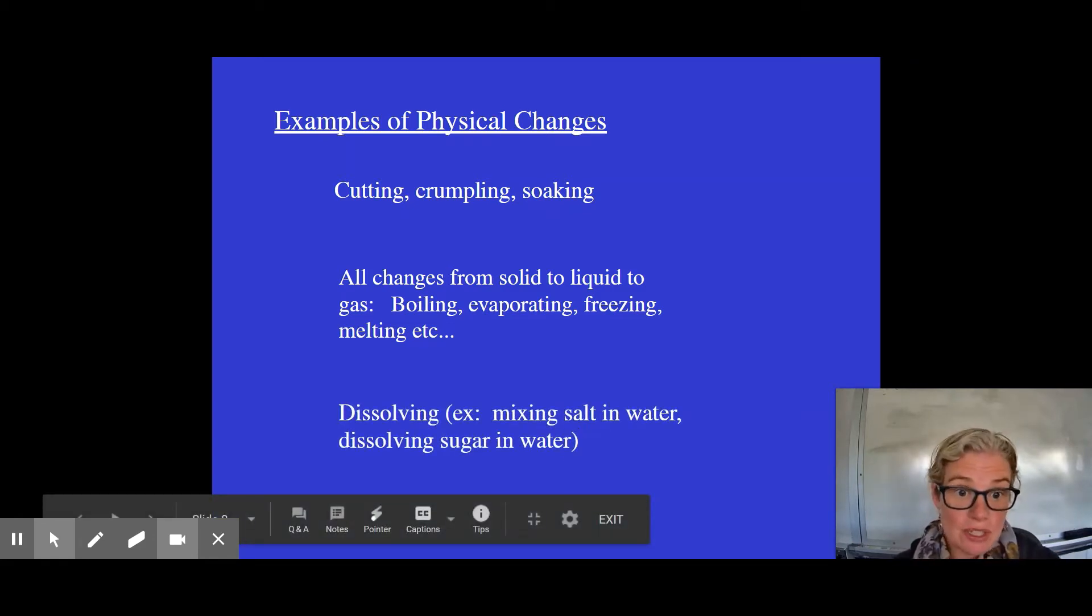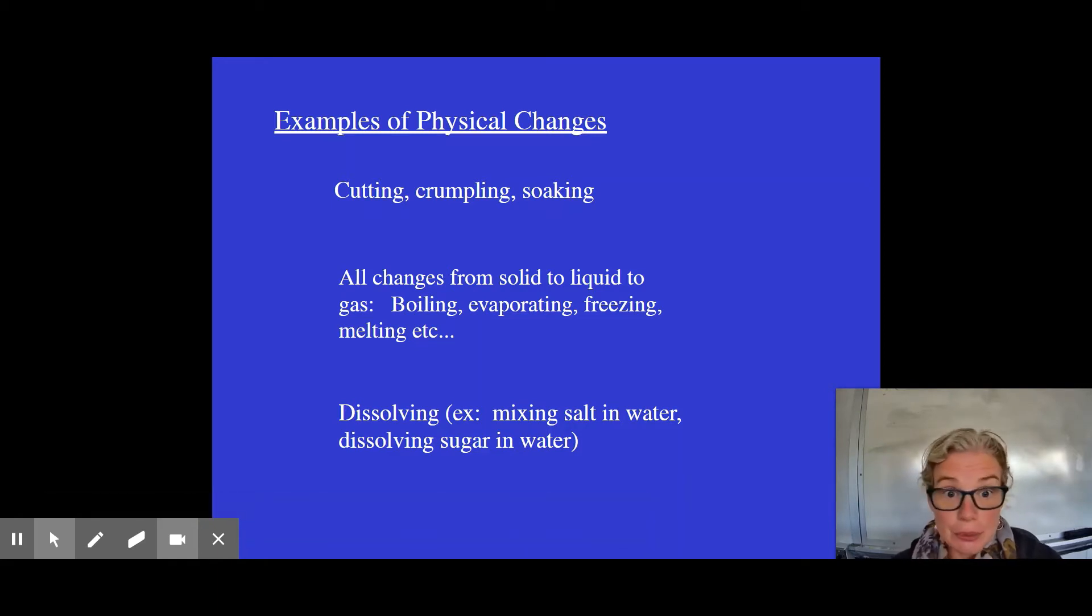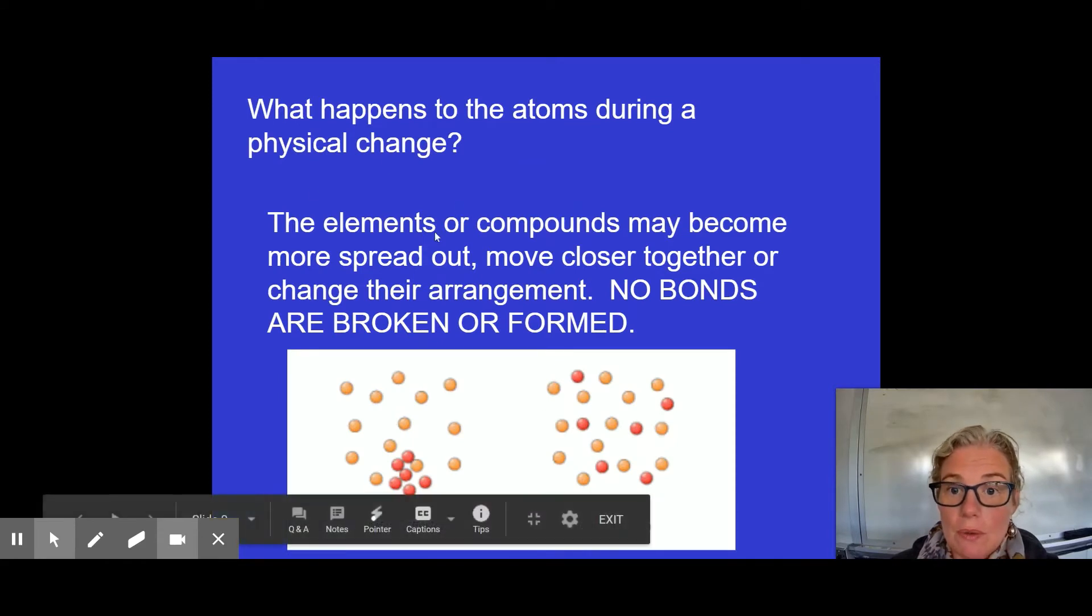Dissolving is also another one that sometimes stumps kids. So if you've ever made Kool-Aid, you stir it in there, it's still just sugar and water and some food coloring. We didn't change what the substances were. We just mix them together. We didn't change the bonding that would result. So what's happening to the atoms?